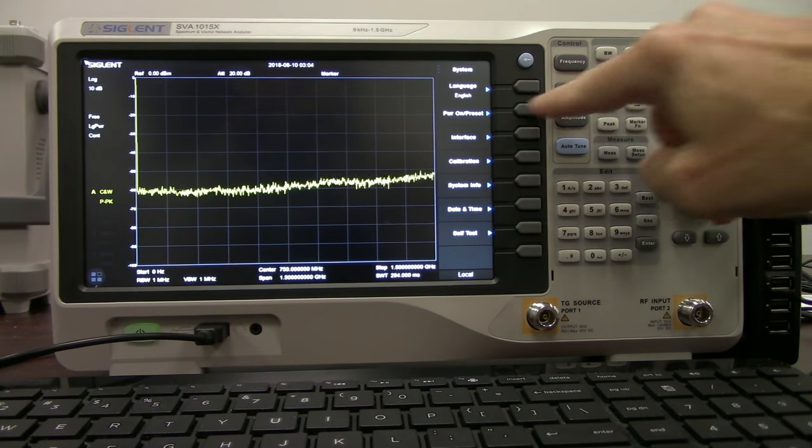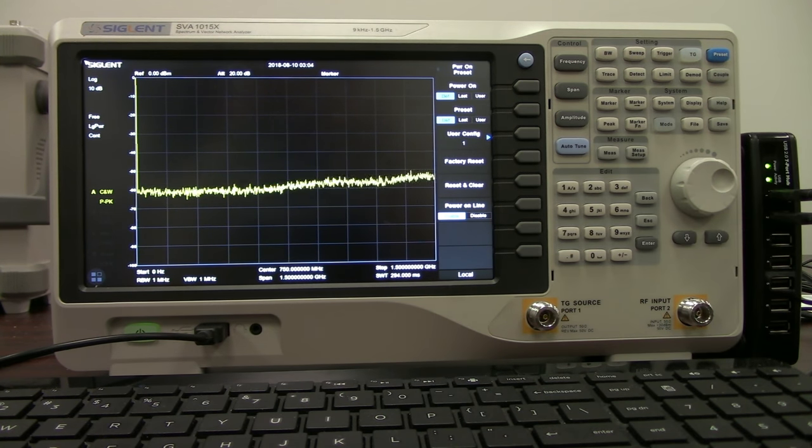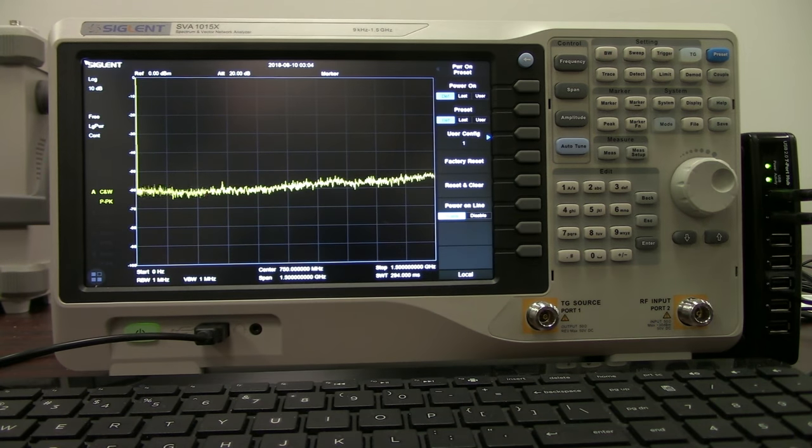So I'm going to go back to the system menu. Power on preset. I'm going to turn on the power on line. And I'm going to then flip the power again.